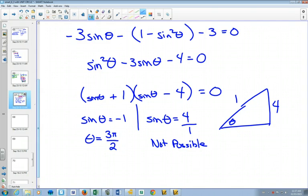You need to show that you know that it's not possible either by writing not possible or putting a big X through that side. Some sort of indication that you know that it's not possible and that our only answer is going to be theta equals 3 pi over 2.